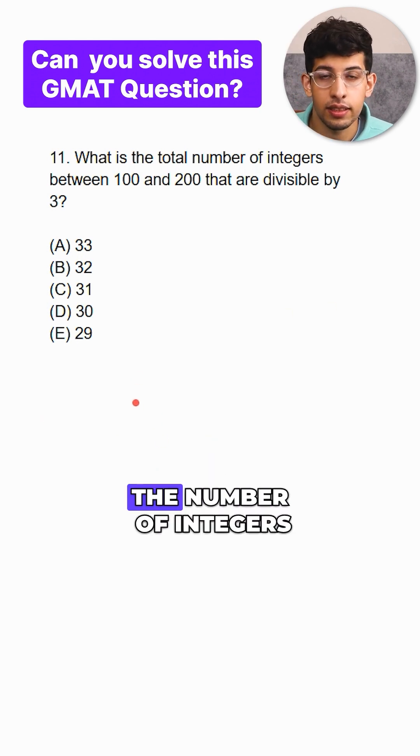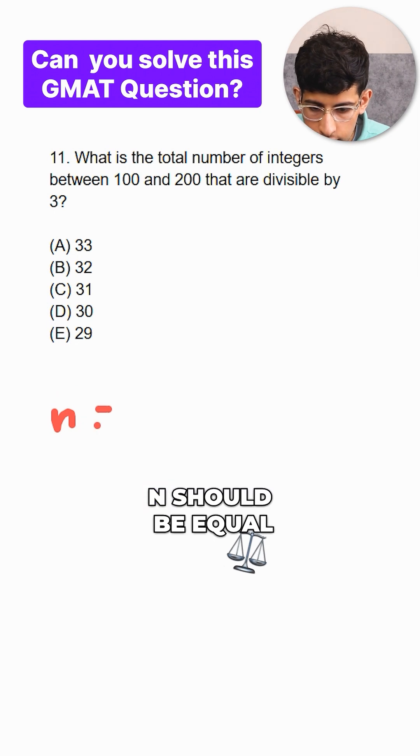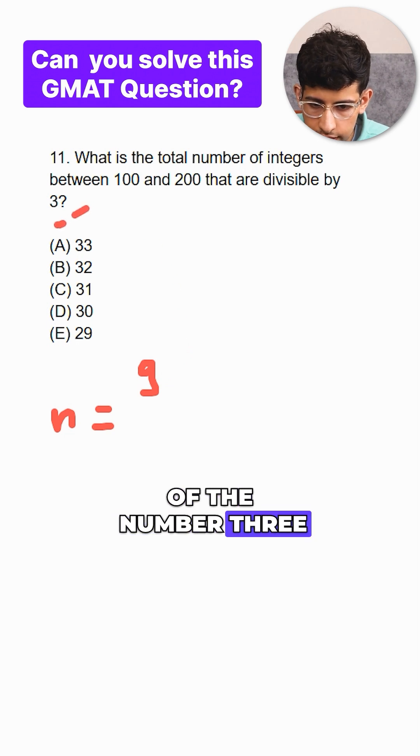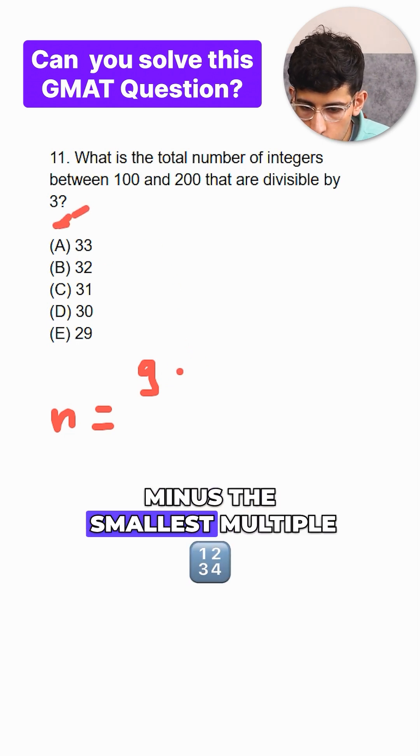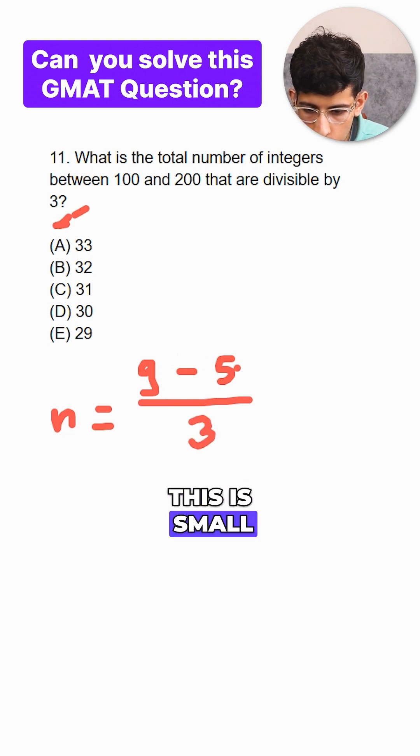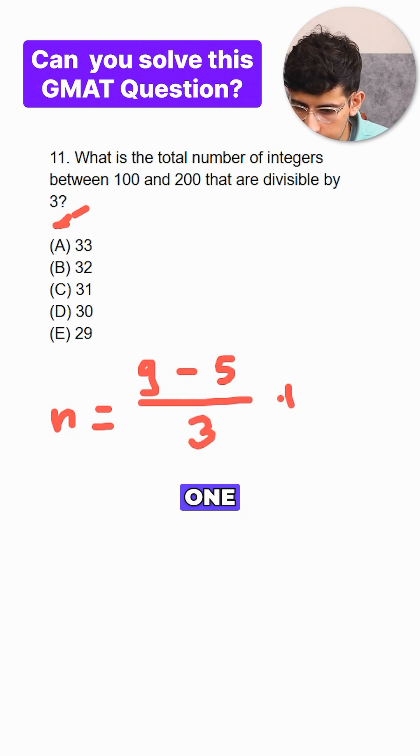That trick is the number of integers n should be equal to the greatest multiple of the number 3 minus the smallest multiple of the number 3 divided by 3, this is small not 5, plus 1.